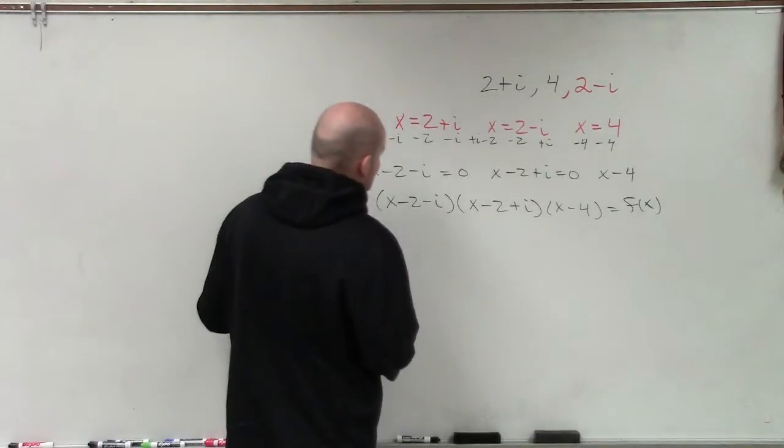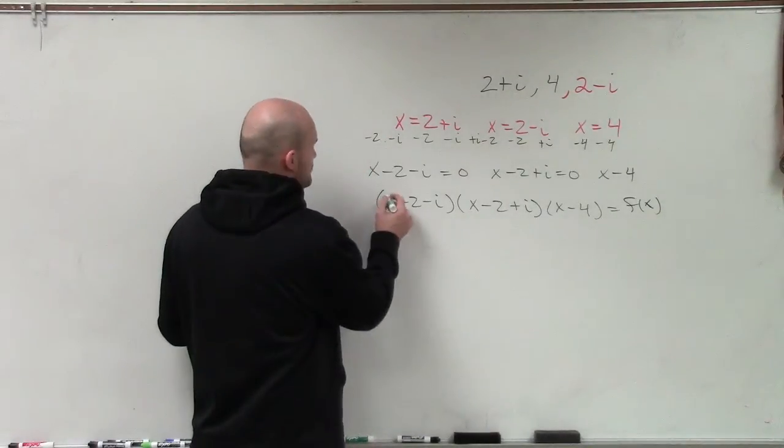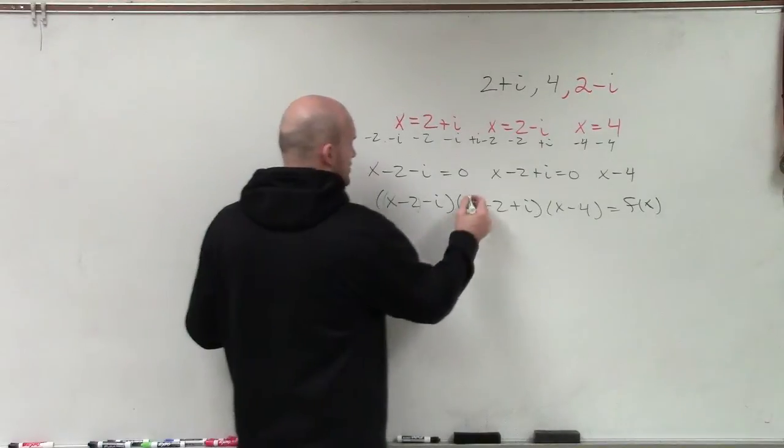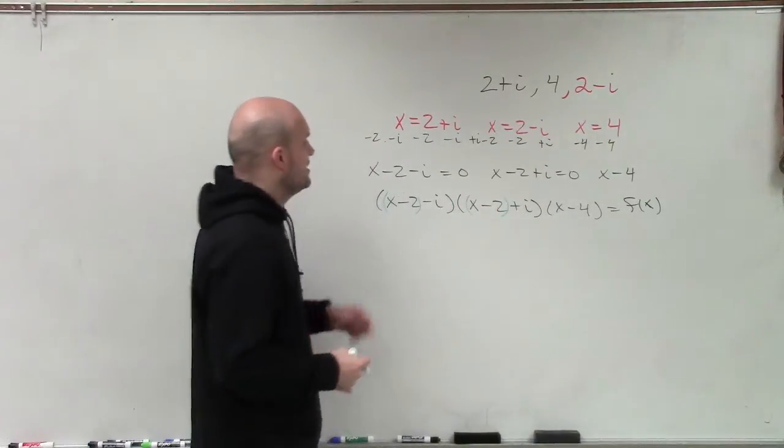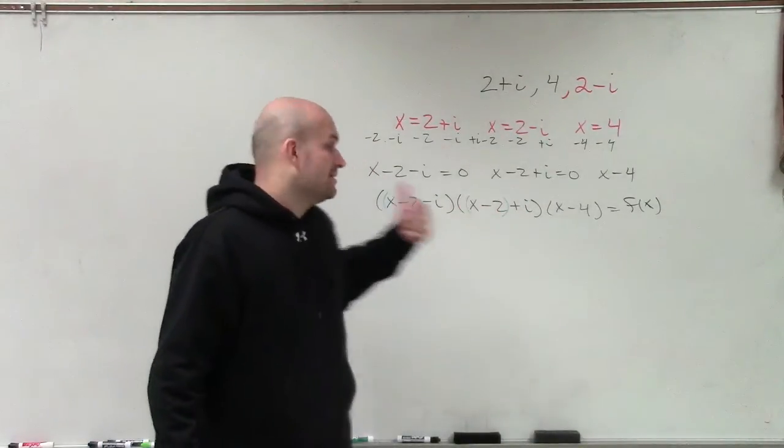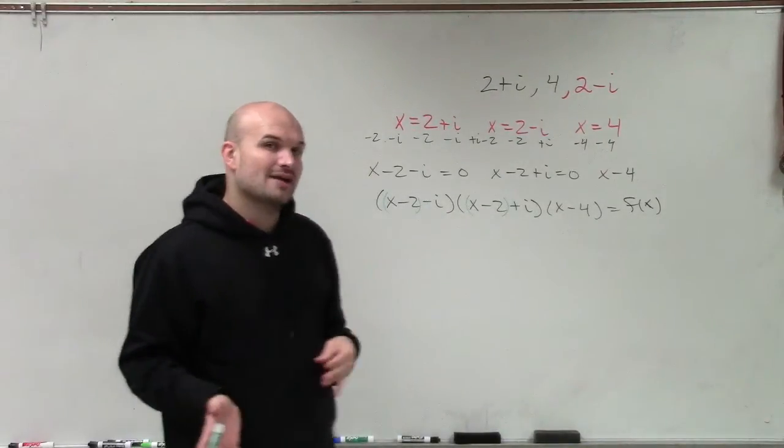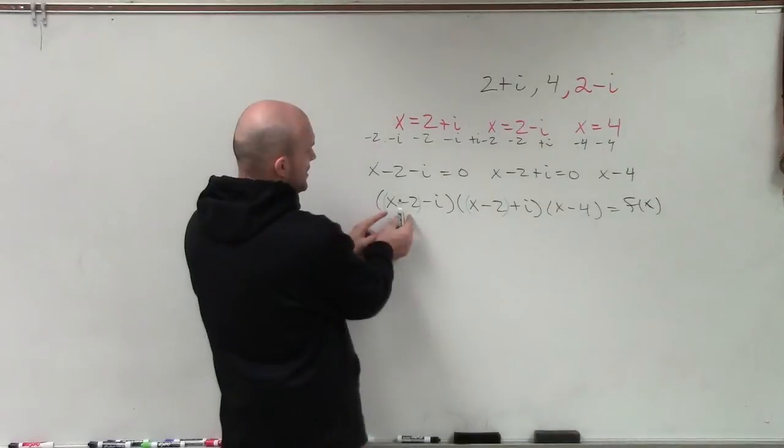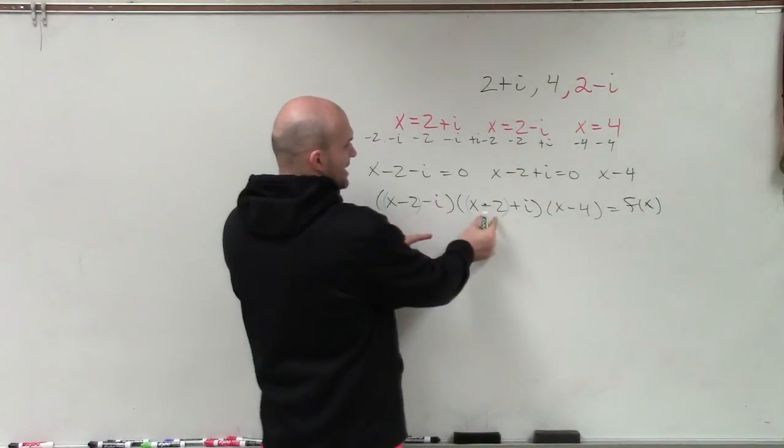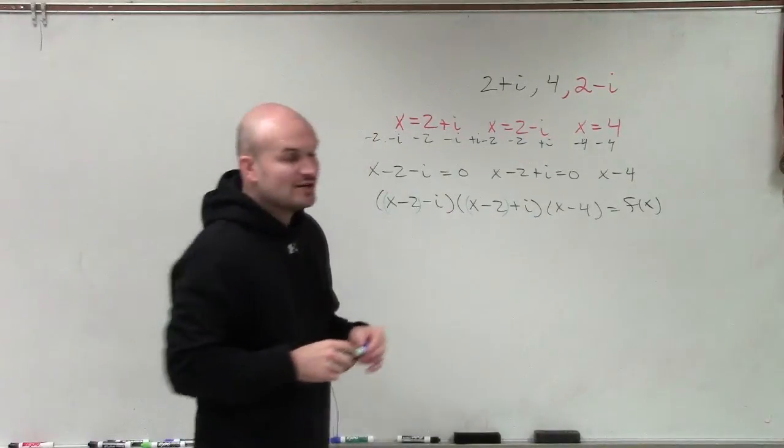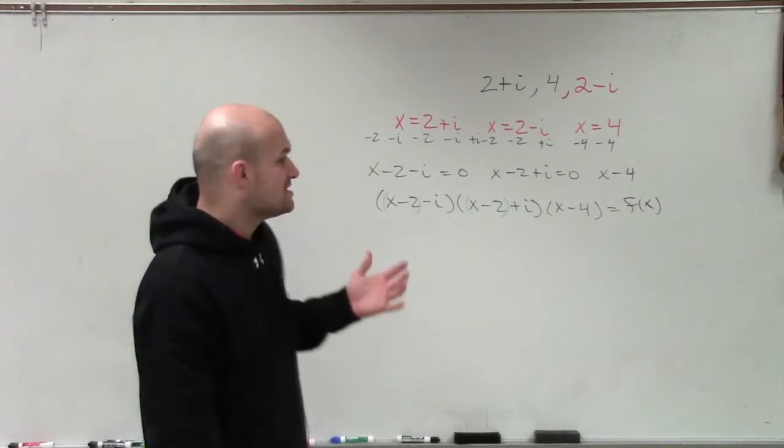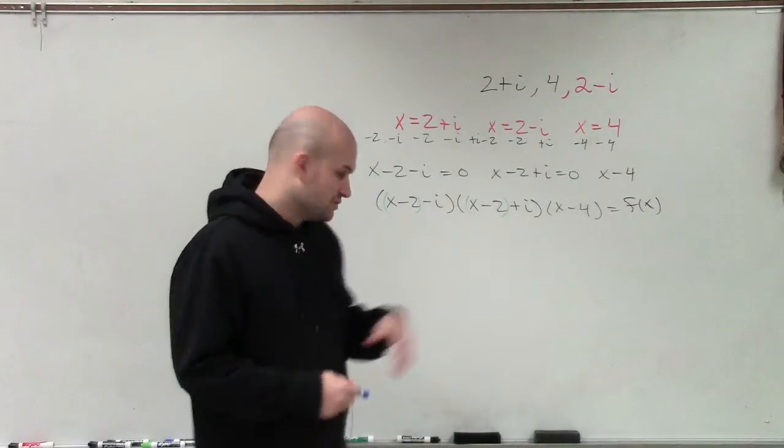And what that simplified process is doing is allowing us to use the difference of two squares. So what I'm going to do is I'm going to group my first two terms of both of these binomials. Notice that they're exactly the same. Now, what I can do, if I was going to multiply these, I'm going to look at these not as trinomials, but now as binomials. Where here's a term and here's a term. Here's a term and here's a term. And by treating them as binomials, you can see that they follow the rule of the difference of two squares.